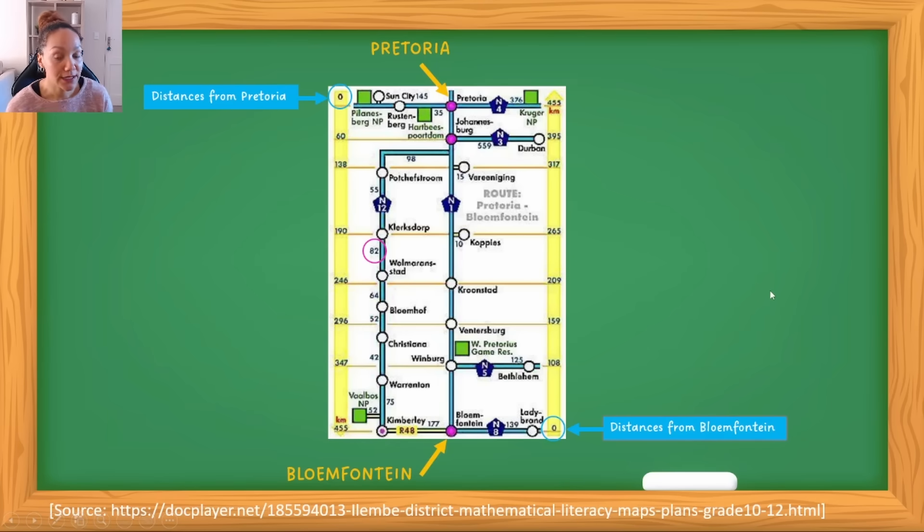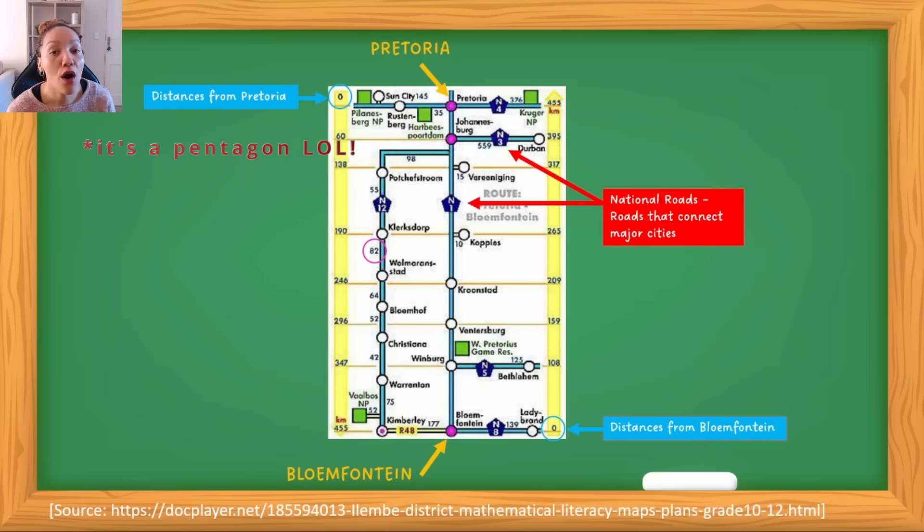Now let's look at other important aspects. These little hexagons are representative of national roads. These represent the national roads. What is a national road? A national road is essentially a road that connects major cities. You'll see this is N1, N3, N4, N12.